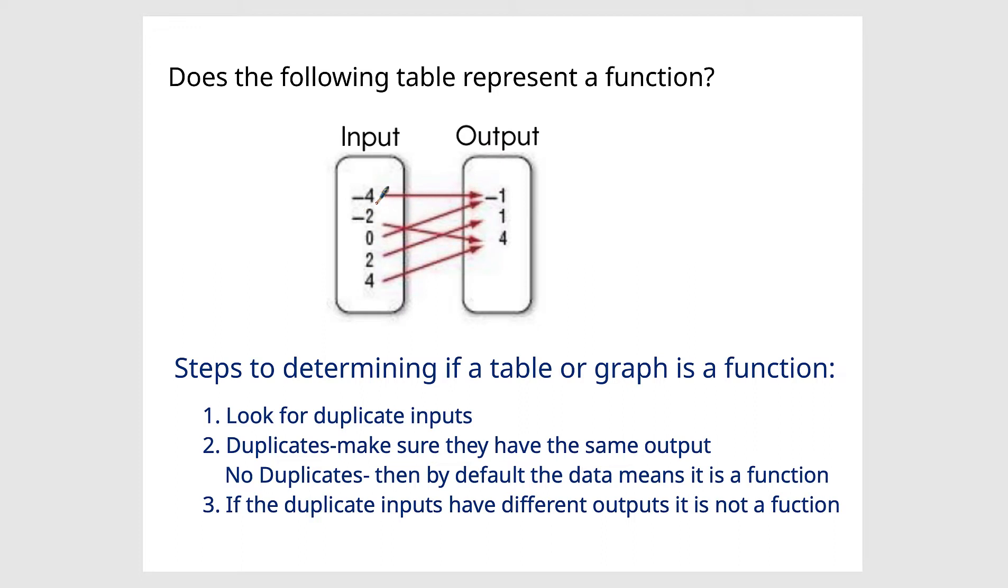So here we have, again, sort of a similar example, it's just not actually in a table format, but you want to look for duplicates. There's actually no duplicates. We do have two different inputs outputting a negative one. Again, that's okay.